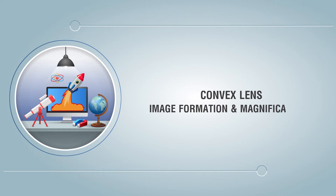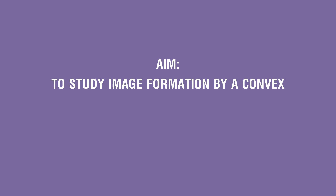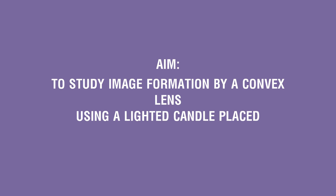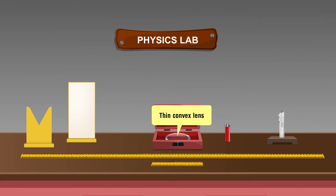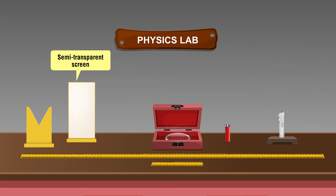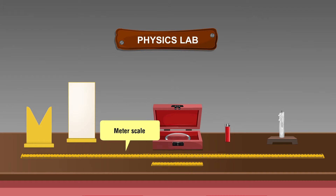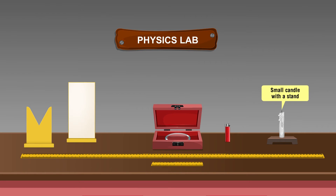Convex lens image formation and magnification: aim to study the image formation by a convex lens using a lighted candle placed at different positions. Materials required: thin convex lens, a lens holder, a semi-transparent screen fixed to a stand, a meter scale, a small scale of 15 centimeters, a lighter, and a small candle with a stand.